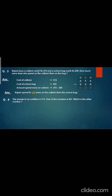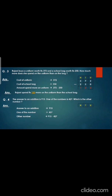Now let's do question number 4. The answer to an addition is 915. One of the numbers is 427 — which is the other number? Here also it is a statement sum. First we will write: answer to an addition — 915. One of the numbers — 427. Other number is 915 minus 427. Then make the box there on the side. Write 915 minus 427 and do the subtraction. Now we cannot minus 5 minus 7, so we borrow from 1 — it will become 0 — and give 1 to 5, it will become 15. 15 minus 7 is 8. Now we cannot minus 0 minus 2, so from 9 we borrow 1 — it will become 8 — and give 1 to 0, it will become 10. 10 minus 2 is 8. And 8 minus 4 is 4. So the other number is 488.